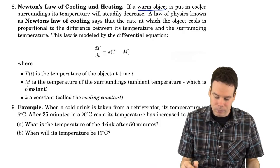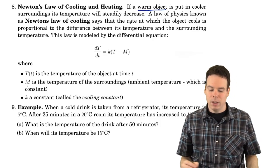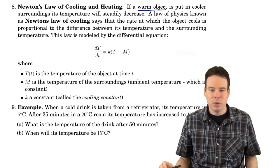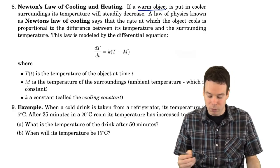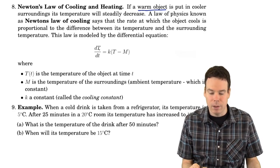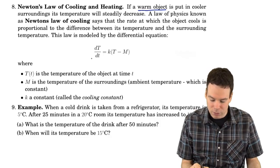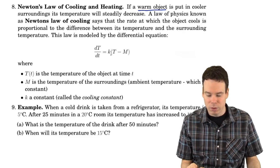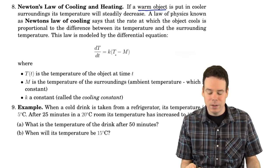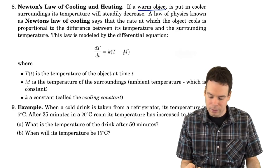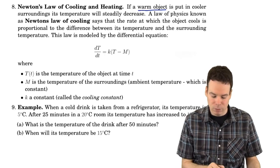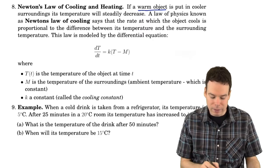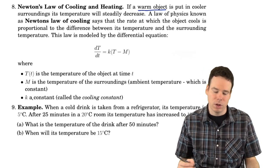Newton's law says the rate at which an object cools is proportional to the difference between the object's temperature and the surrounding temperature. Interpreting this as a differential equation using derivatives: if capital T is the temperature, then dT/dt is proportional — with constant of proportionality k — to the difference T minus M. Capital T is the temperature of the object, capital M is the ambient temperature, and k is the cooling constant.